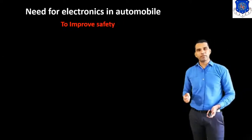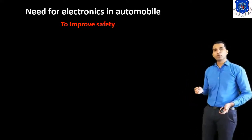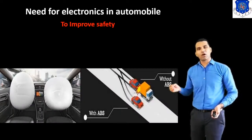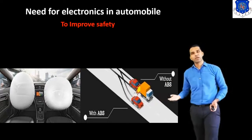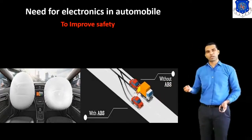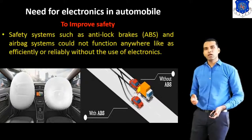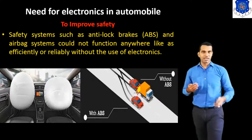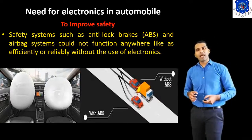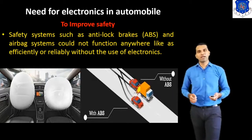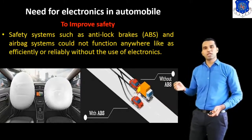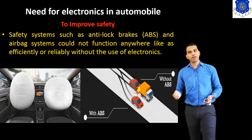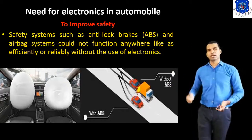The second need is to improve safety. By introducing safety gadgets or electronic systems inside the car, we can improve the safety of the driver and the passenger. Safety systems such as the anti-lock braking system, airbags, and seatbelt pre-tensioner systems could not function as efficiently or rapidly without the use of electronics. This system is really helpful to reduce the rate of accidents and also provides comfort inside the car.